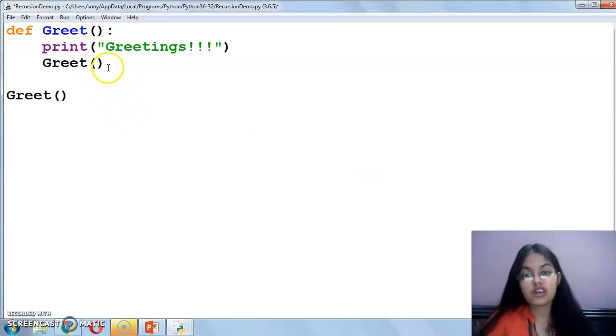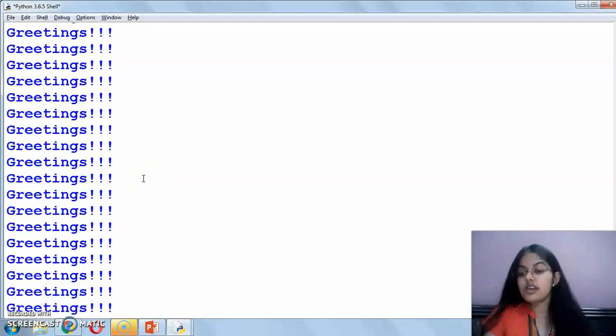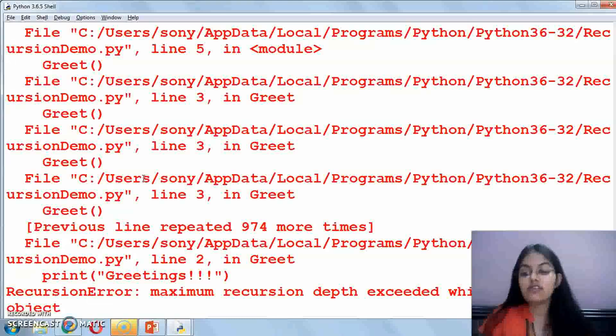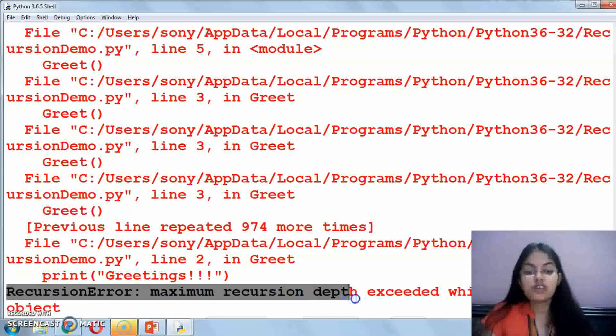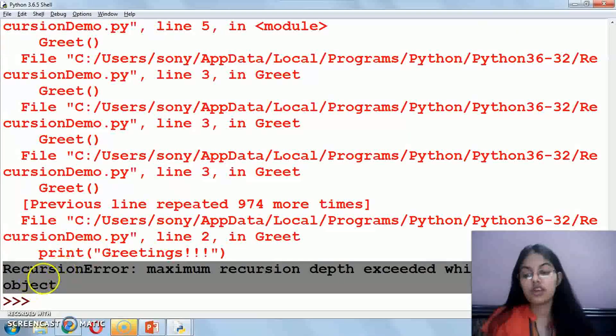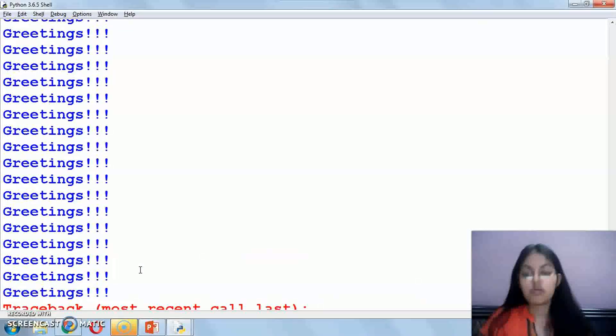When a function calls itself, or calls another function, that process is called recursion. Now see here, it's printing the message continuously. This is called infinite recursion. When will this stop? When the memory exceeds. See the error showing here - recursion error, maximum recursion depth exceeded. When the maximum storage space in memory is exceeded, your recursion program will stop.